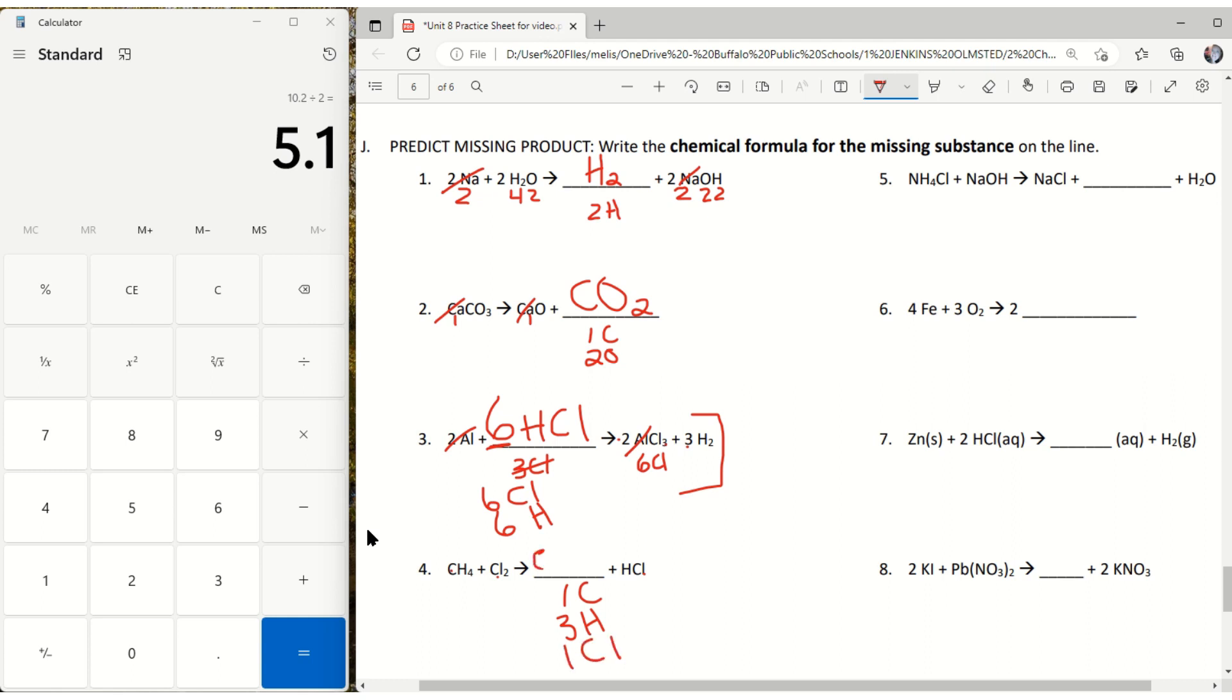So when we write an organic compound, we write C's, then H's, then whatever's left. So that's it.